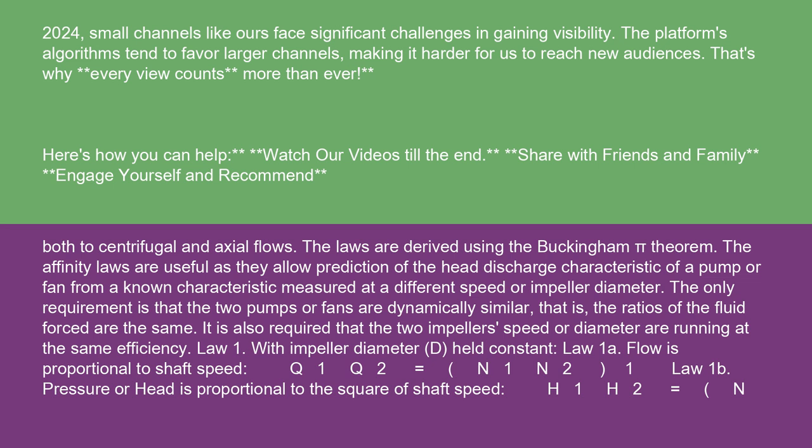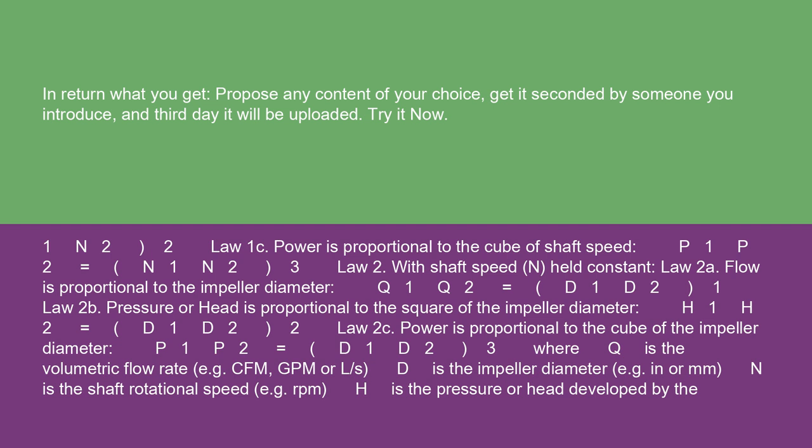Law 1A: Flow is proportional to shaft speed. Q1/Q2 equals N1/N2. Law 1B: Pressure or head is proportional to the square of shaft speed.